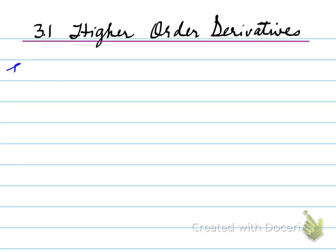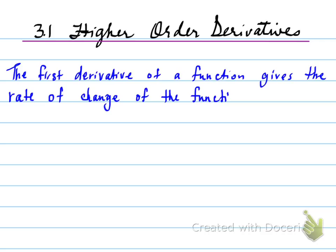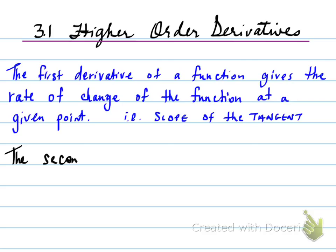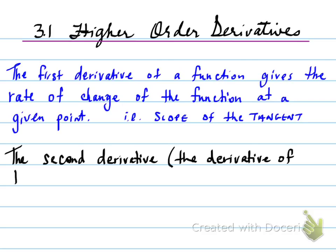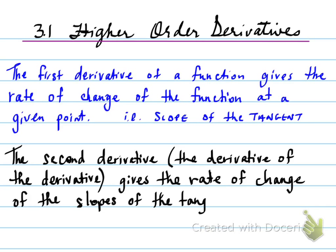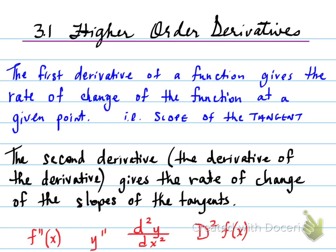3.1 higher order derivatives. The first derivative of a function gives the rate of change of the function at a given point, i.e., the slope of a tangent. The second derivative is the derivative of the derivative, giving the rate of change of the slopes of the tangent, also known as acceleration. So in the first part we have velocity, and in the second part we have acceleration.